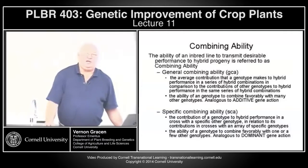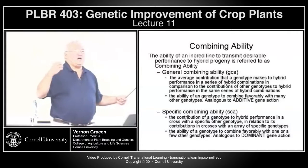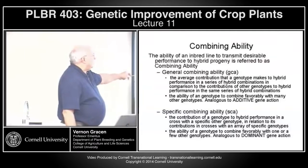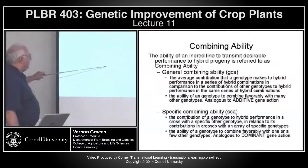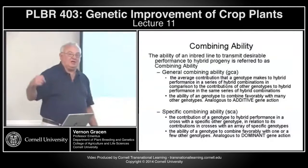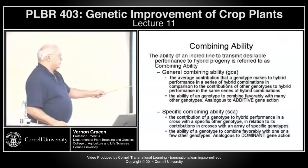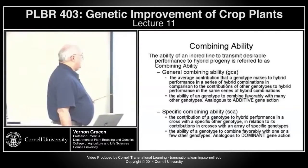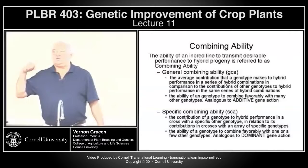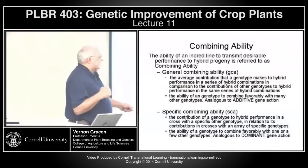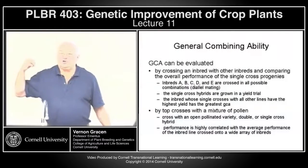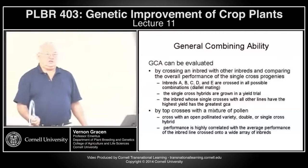Unfortunately, general combinability is not enough to drive the maximum performance you get from specific combining ability (SCA), which is the ability of a genotype to cross with a specific other inbred genotype and produce maximum heterosis. SCA is the ability of a genotype to combine favorably with one or a few others, and it is analogous to and depends on dominant or non-additive gene action — dominant, over-dominance, and epistatic gene actions.